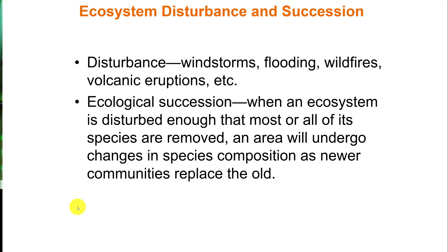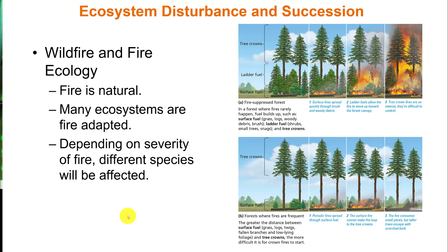Ecosystems are often vulnerable to disturbances like windstorms, flooding, wildfires, and volcanic eruptions. With ecological succession, an ecosystem is disturbed enough that most or all of its species are removed, and the area undergoes changes in species composition as new communities replace the old. Wildfire is a very important part of natural ecosystems. As humans we tend to think of it as devastating, but in terms of a wild ecosystem it is necessary for a healthy ecosystem to have fire run through it occasionally. Many ecosystems are fire-adapted, and some species depend on fire — only releasing pine cones or seeds when touched by flame.